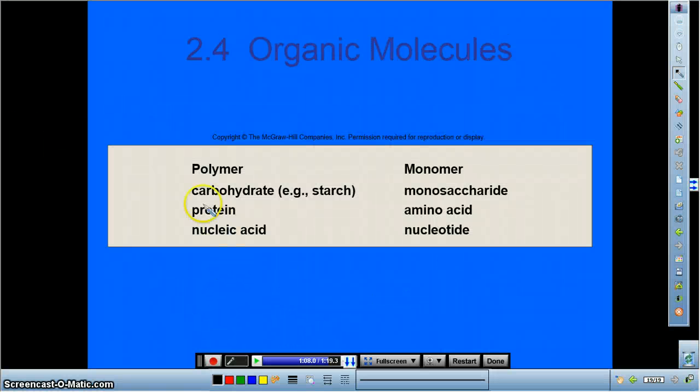Some examples of polymers on this side are carbohydrates, proteins, and nucleic acids, and those polymers are made up of smaller organic molecules called monomers. Monosaccharides make up carbohydrates, amino acids make up proteins, and nucleic acids are made up by nucleotides.